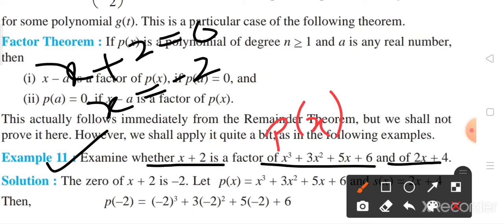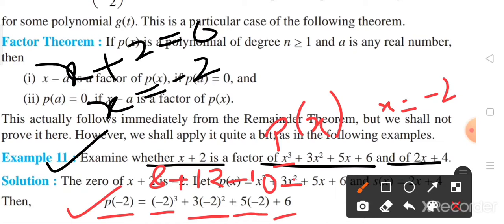Now, place this minus 2 value in polynomial p(x). So, instead of x, we place minus 2. So, what we get? Placing minus 2 over here in place of x: minus 2 cube plus 3 into minus 2 square plus 5 into minus 2 plus 6. So, what we get? Minus 8, plus 12,